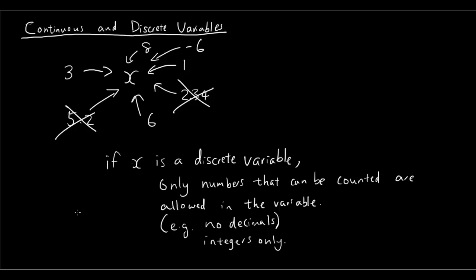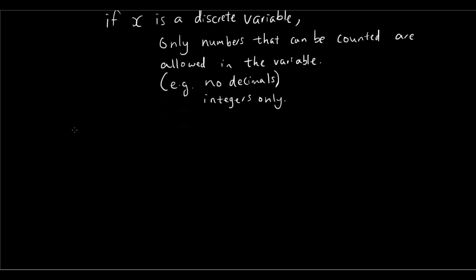Now this changes when x becomes continuous. So if we define x as a continuous variable, let's say let y be a continuous variable. I'm just going to write y there and we can put in 3.5, we can put in 2.614, we can put in 7.1356.